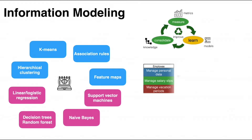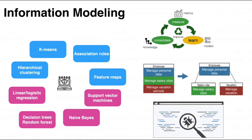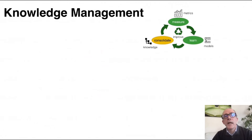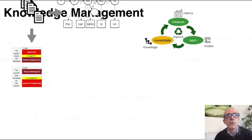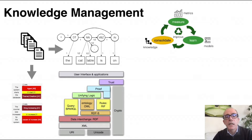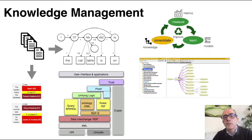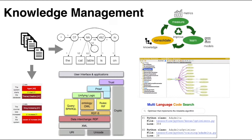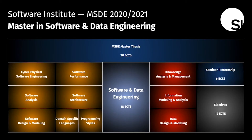This is applied in one project to the refactoring of code, and in a second project to the identification of bug-prone models. The Knowledge Management course consolidates extracted information into knowledge: first using NLP techniques like part-of-speech tagging, semantic role labeling, and sentiment analysis to extract knowledge from textual documents; and second, using semantic web technologies and ontologies. Projects involve automatically identifying bad smells in code and developing a search engine for source code.